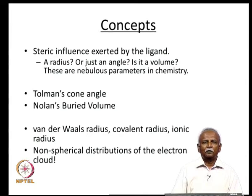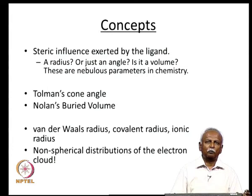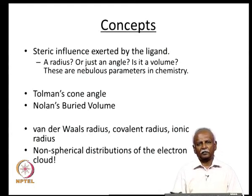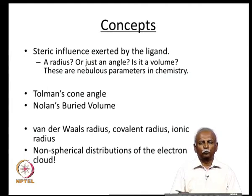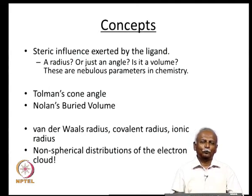This difficulty in quantifying steric parameters is not unique to organometallic chemistry; it is a problem in inorganic chemistry in general. Even the van der Waals radius, which should be easy to obtain, is not available for many elements. The covalent radius and ionic radius all have problems associated with the measurements used to obtain them. Very often there are non-spherical distributions of the electron cloud, and in the presence of a second atom or anion in close vicinity, an ion might change its shape and assume a very different distribution of electron density.